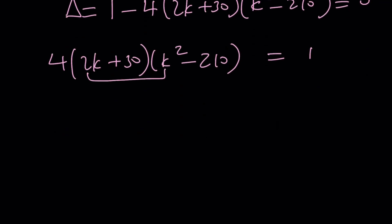c is k squared minus 210. And the whole thing is going to be zero. And then from here, we're going to get something real messy because we're going to get 8k. But basically, the whole idea is for this to be 1 minus 4 times 2k plus 30 multiplied by k squared minus 210. And then that is going to equal 1. And then we can just go ahead and distribute everything.